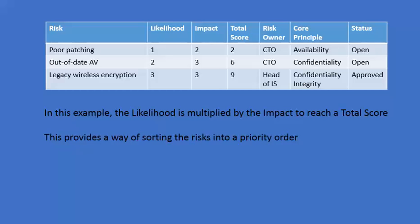You may also wish to consider recording which of the three core security principles are affected by the risk — whether that's availability, confidentiality, or integrity. And each risk should have a status: whether it's open and being worked on, whether a solution has been approved, or whether it's been closed. This is a simple example of a risk matrix; some organizations have highly detailed documents, but sometimes it's better to just keep it simple.